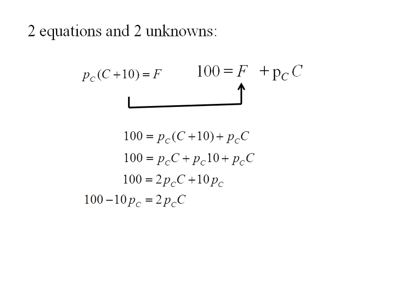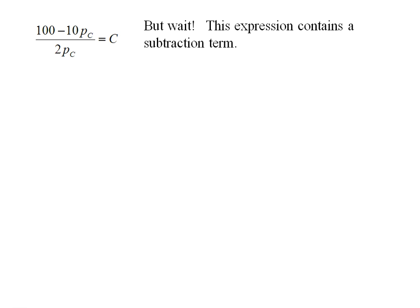I'm ultimately looking to solve for C — clothing. So: 100 minus 10 PC equals 2 PC times C. Dividing both sides by 2 PC, I have my demand equation for clothing: (100 minus 10 PC) divided by 2 PC. You can also simplify this to (50 minus 5 PC) divided by PC — either form is fine.